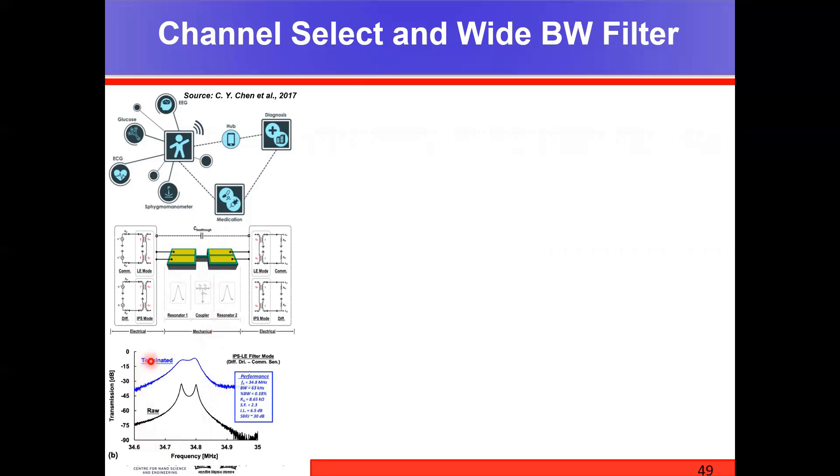And this is the raw and the terminated filter response. As we can see from this particular figure, a very low percentage bandwidth of 0.18 percent, which corresponds to a bandwidth of 63 kilohertz for a center frequency of 34.8 megahertz. This is the case where they use two different distinct resonant modes mechanically coupled to generate a narrow bandwidth filter.